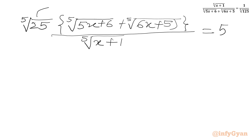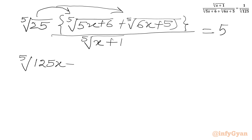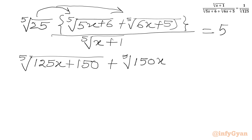Now we will take this 5th root factor into the two terms. So we can write: 5th root of 25 times (5x+6) gives 5th root of (125x + 150), and 5th root of 25 times (6x+5) gives 5th root of (150x + 125). The denominator remains the 5th root of (x+1).